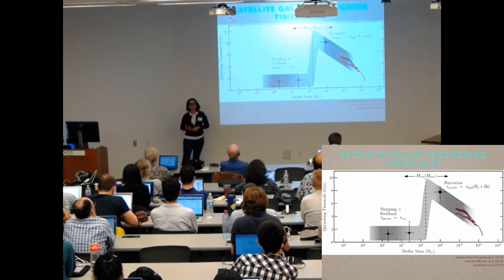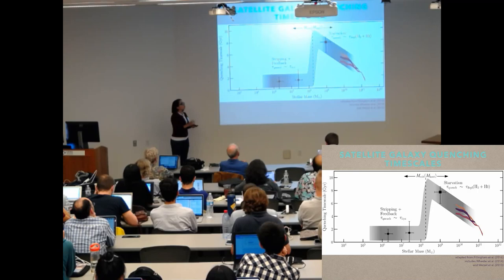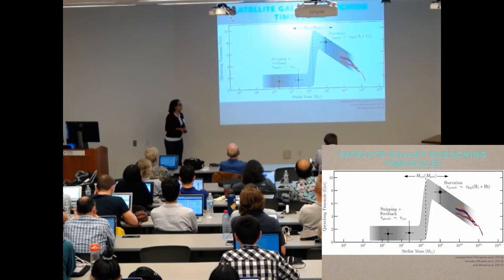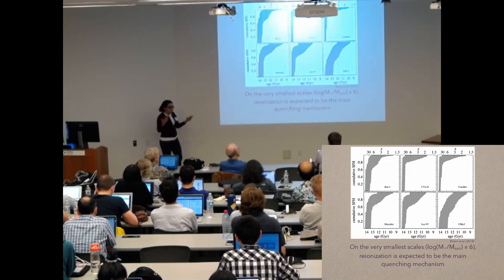So this is a big picture of satellite galaxy quenching. On the left, we have work done by Andrew Wetzel in 2013, where he looked at the variances in host mass and how that affects the satellite quenching in the larger scales. Coral Wheeler in 2014 looked at starvation, and then Sean Fillingham looked at stripping in the classical dwarf range in 2016. And then we get to the smallest satellite ranges, and as you can see, there's not much there. But that's where I come in.